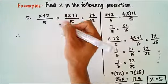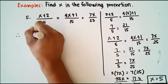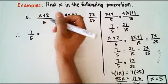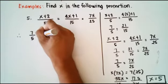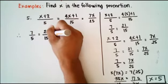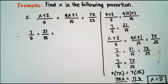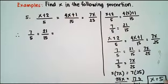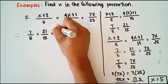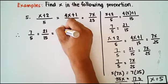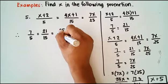Therefore, our proportion is 7 over 5 equals 21 over 15 equals 35 over 25.